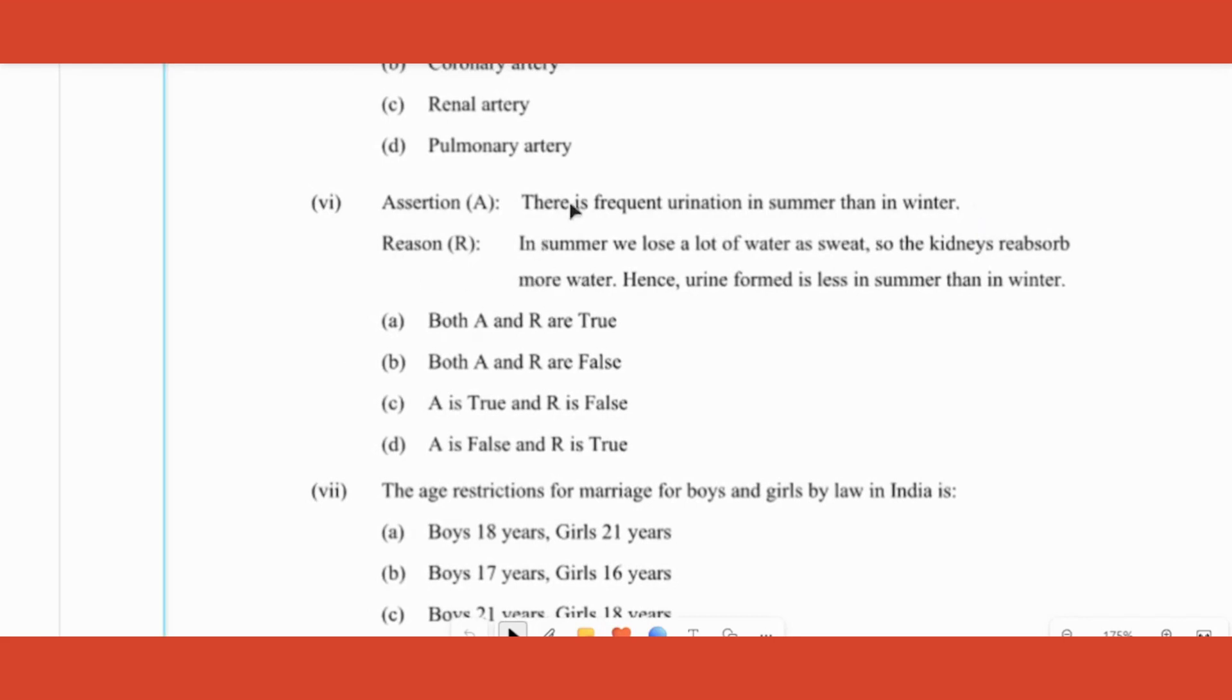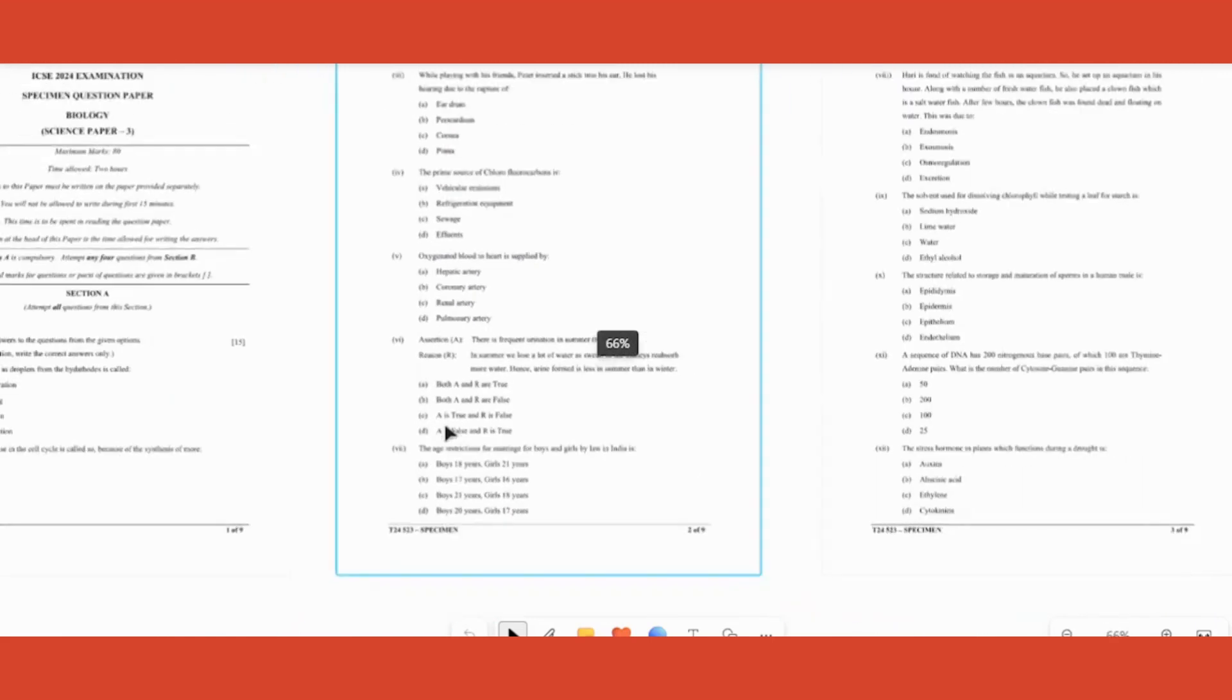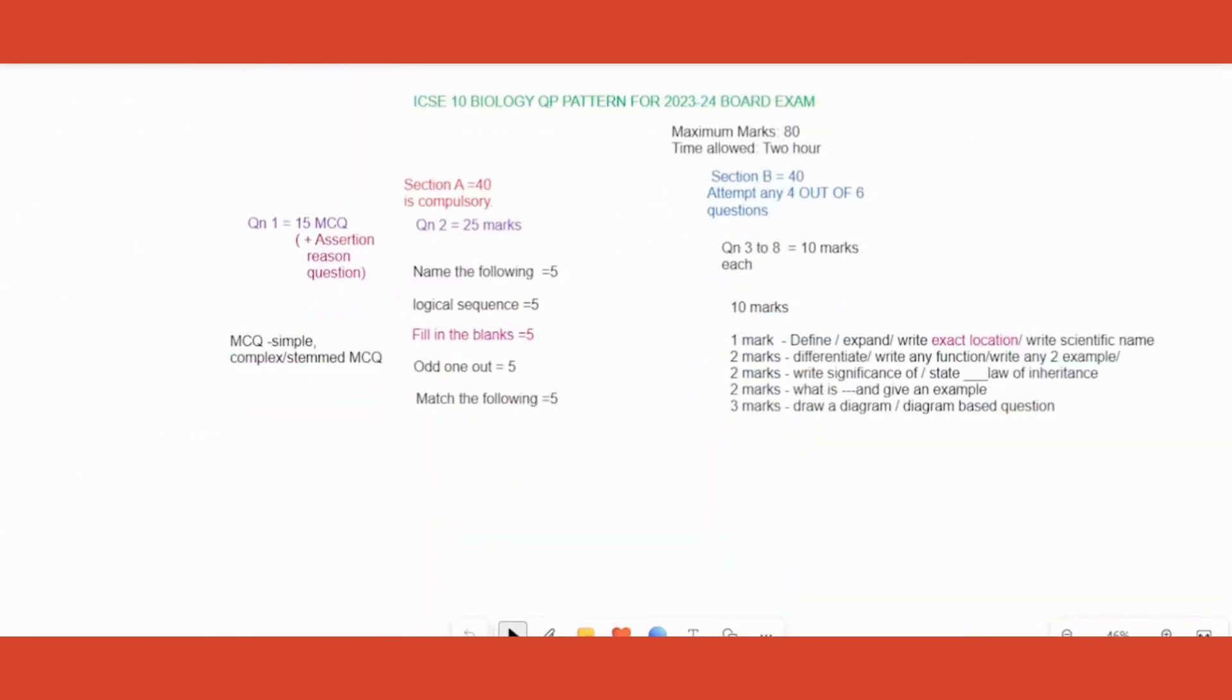Let's do this question: there is frequent urination in summer than in winter. Is it a correct statement or not? Then reason is given: in summer we lose a lot of water as sweat, so kidneys reabsorb a lot of water, hence urine is formed in less quantity during winter. Is this a reason for that? You need to think and then you have to pick options given. Such questions are called assertion-reason, completely newly introduced to the ICSE pattern.